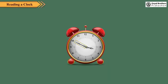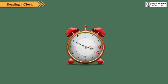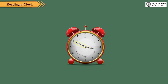Observe this clock. Here, the minute hand is at 10, meaning 5 × 10 equals 50 minutes have passed. The hour hand is between 3 and 4. We could write the time as 50 minutes past 3, but as a convention, when the minute hand is in the 2nd half hour, we consider the number of minutes to the next hour. The minute hand has yet to travel 10 minutes to reach the next hour, which is 4. So we write the time as 10 minutes to 4.